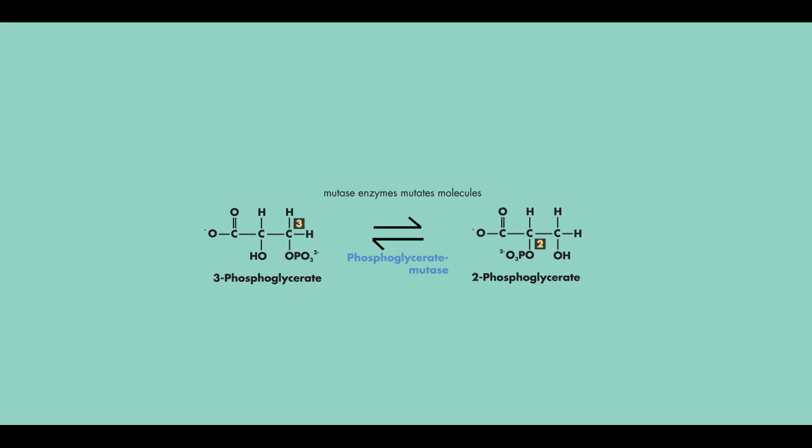And in this case, the mutation that takes place is that the phosphate is moved from the third to the second carbon. Next, 2-phosphoglycerate is catalyzed to phosphoenolpyruvate by the enzyme enolase.